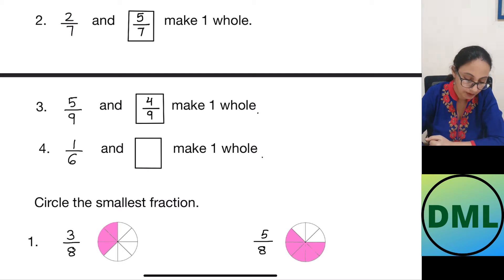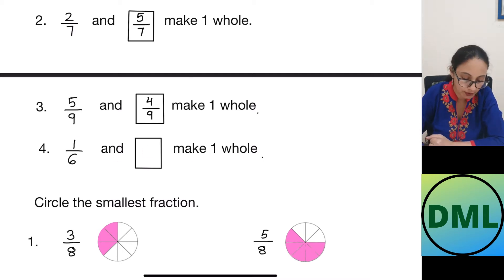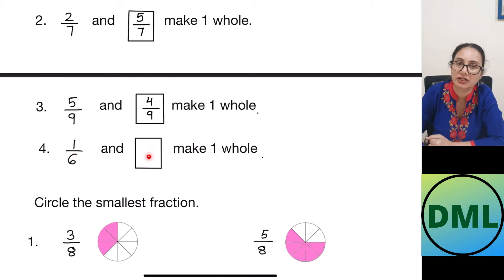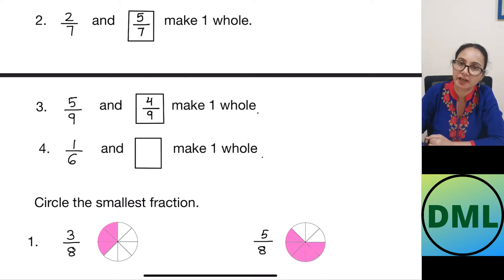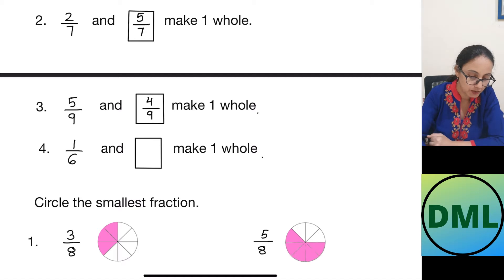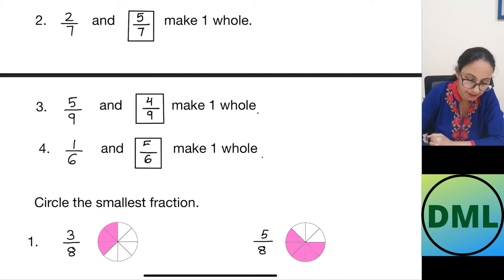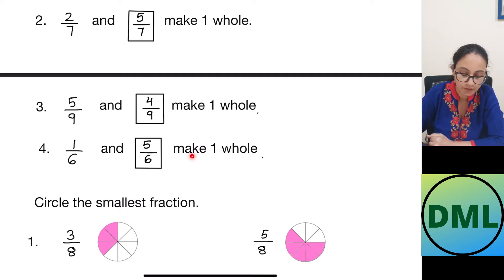Let's see one more example. 1 by 6 and dash make 1 whole. So it is 1 by 6 — out of 6 parts 1 part is shaded. I have to write down the unshaded part. Unshaded part is 6 minus 1 which is 5 parts unshaded. So I will write down 6 in the denominator. That means 1 by 6 and 5 by 6 will make 1 complete whole.